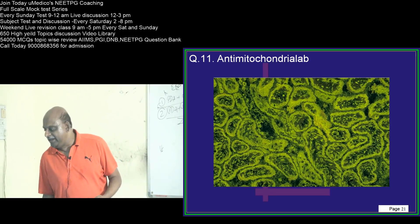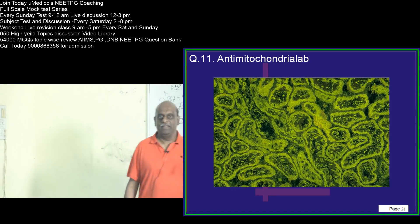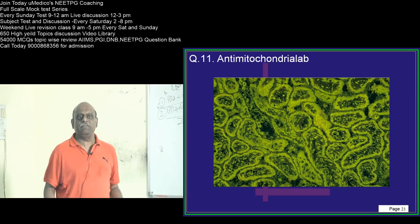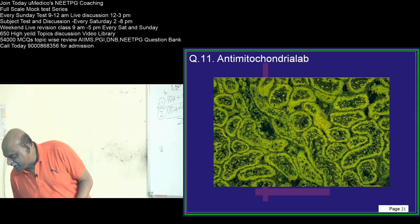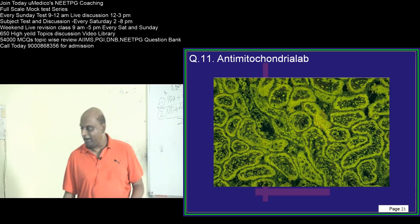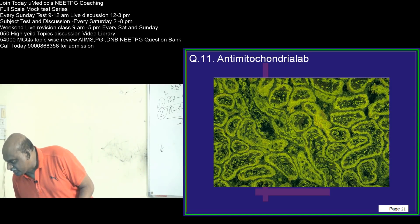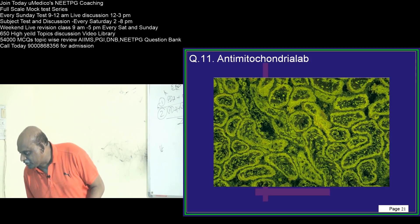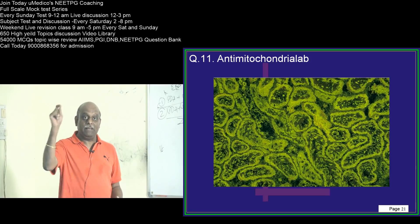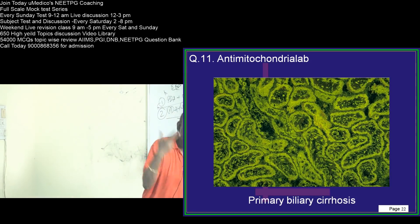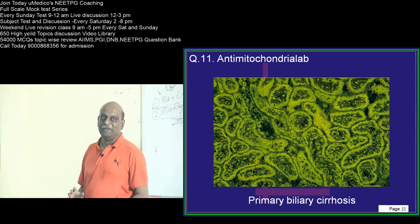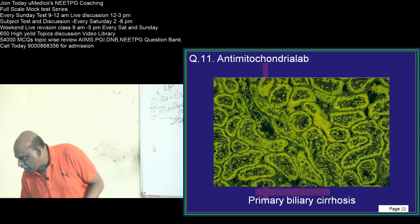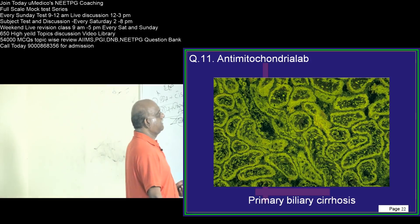Anti-mitochondrial antibodies — you are seeing them here. Where do you find them? Question number 11. A middle-aged woman presents with pruritus and significant jaundice. Amir Farooq is saying primary sclerosing cholangitis — no. Chandru is saying primary biliary sclerosis — right! Don't confuse between primary sclerosing cholangitis and primary biliary sclerosis; that is a common mistake in the exam. The answer is primary biliary sclerosis. Very good to everyone who answered PBS — primary biliary sclerosis.